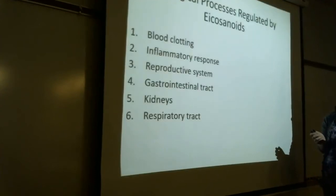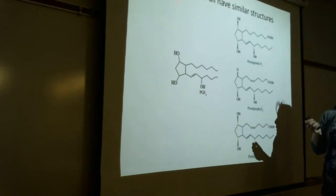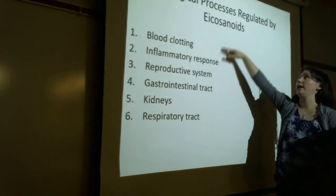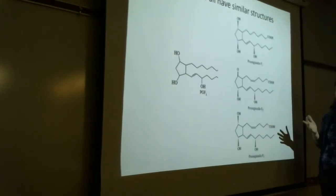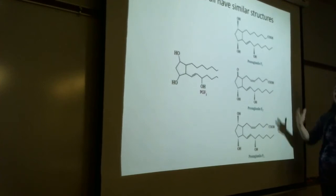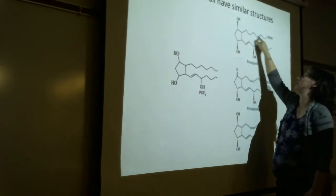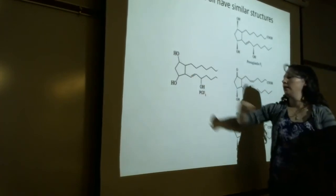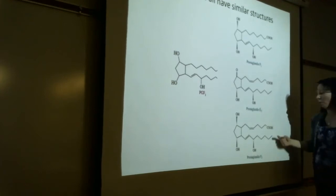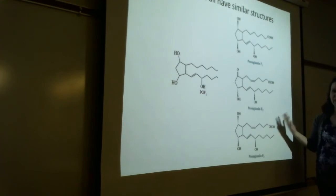One important eicosanoid family I want to highlight is the prostaglandins, which are involved in inflammation. You can identify a prostaglandin by its characteristic structure: a five-carbon ring with a carboxyl group on one end and two long tails. Since they all share the same parent molecule, they all have similar structures. There are six subgroups of eicosanoids total.